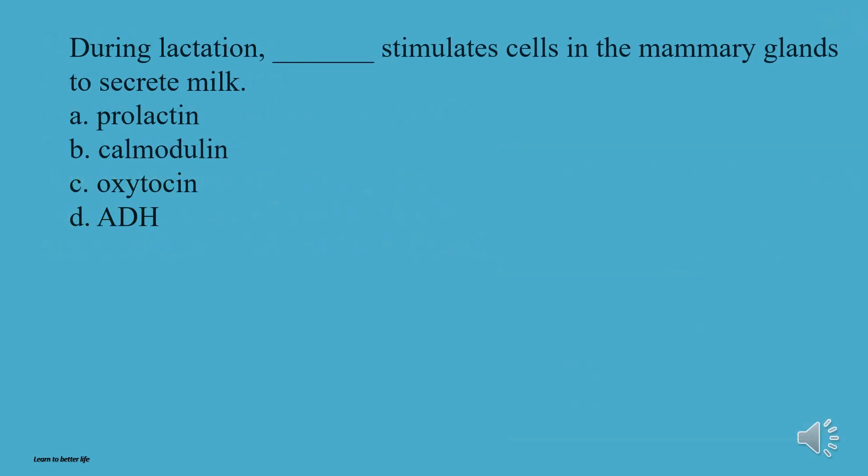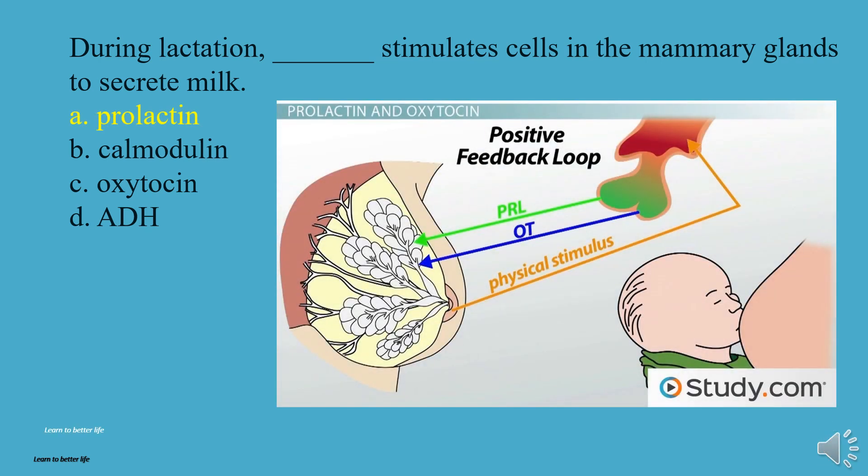During lactation, what stimulates cells in the mammary glands to secrete milk? A, Prolactin. B, Calmodulin. C, Oxytocin. D, ADH. The answer is A, Prolactin.